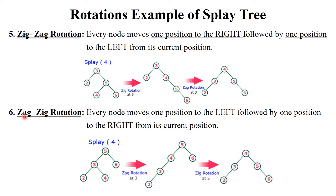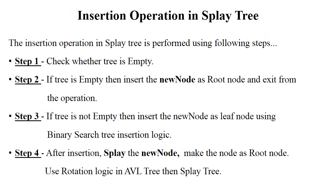Zag-zig rotation means left then right. First perform left rotation, then right rotation. Perform left rotation on node four: four goes here, three is here, and two is here. Then perform zig rotation — right rotation on four: four moves to the right side, five is here, and six is here. Finally this splay tree is generated and four becomes root of the tree. In this way, each and every rotation is performed in splay tree.